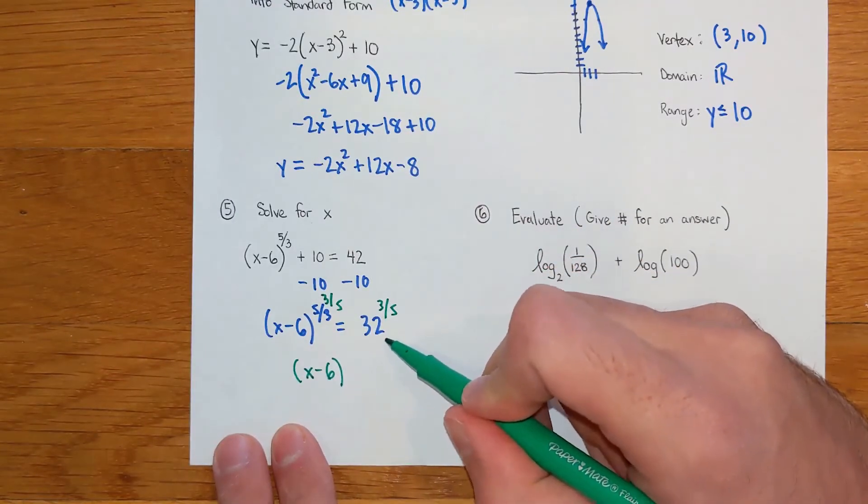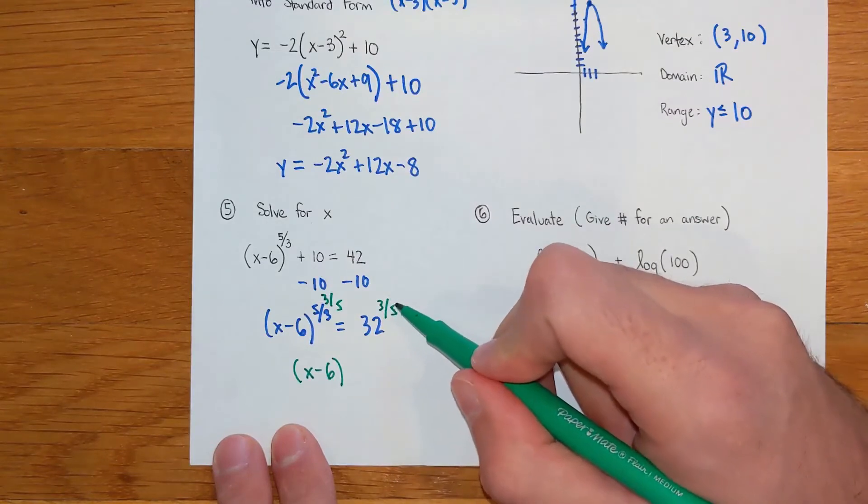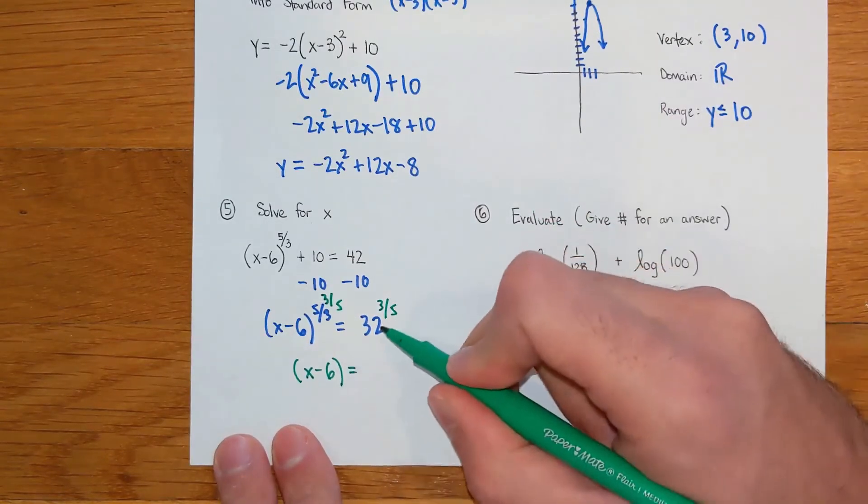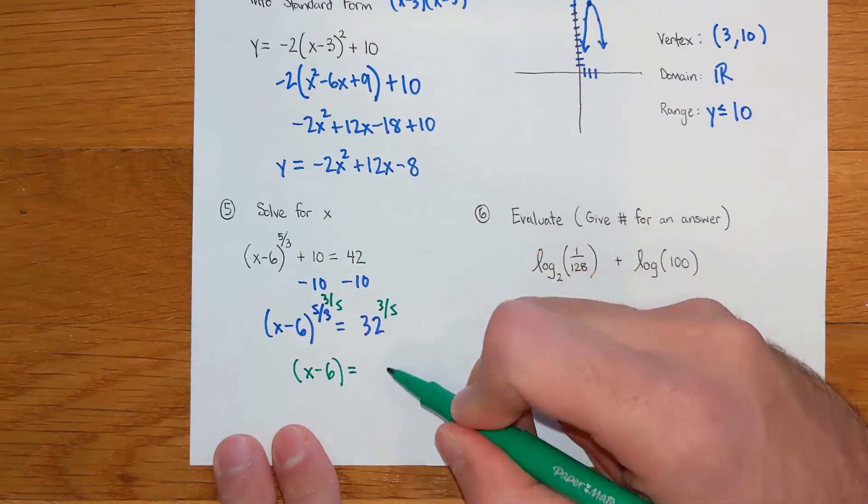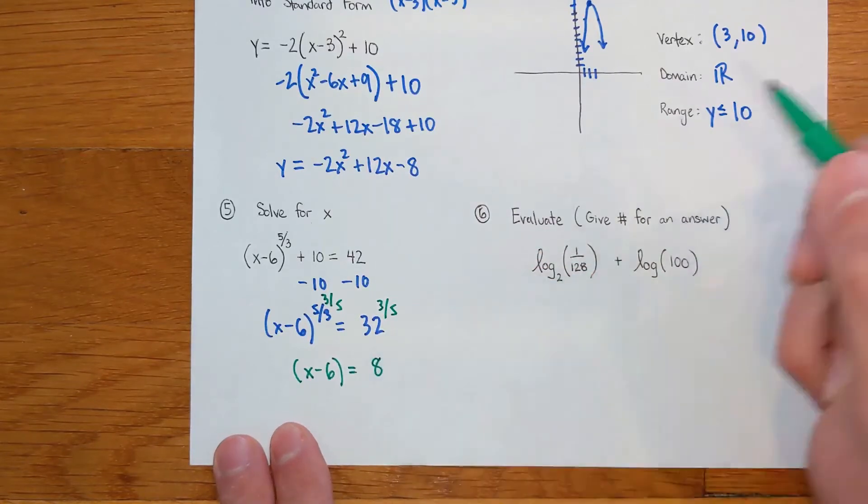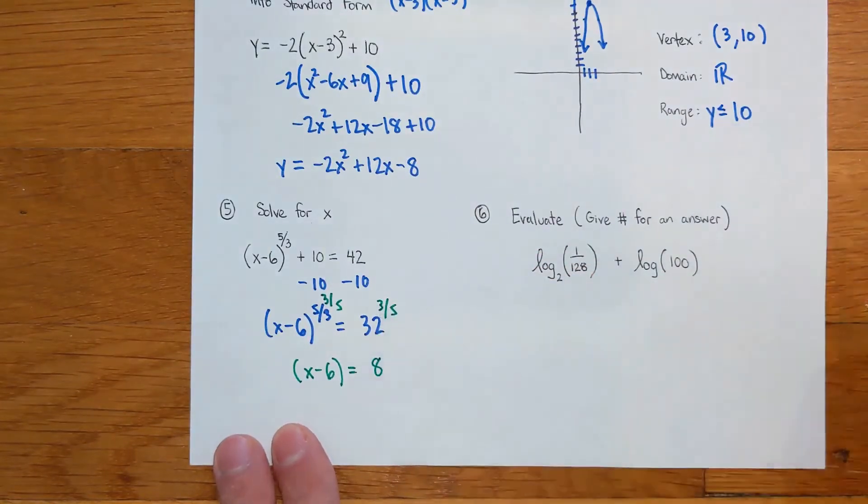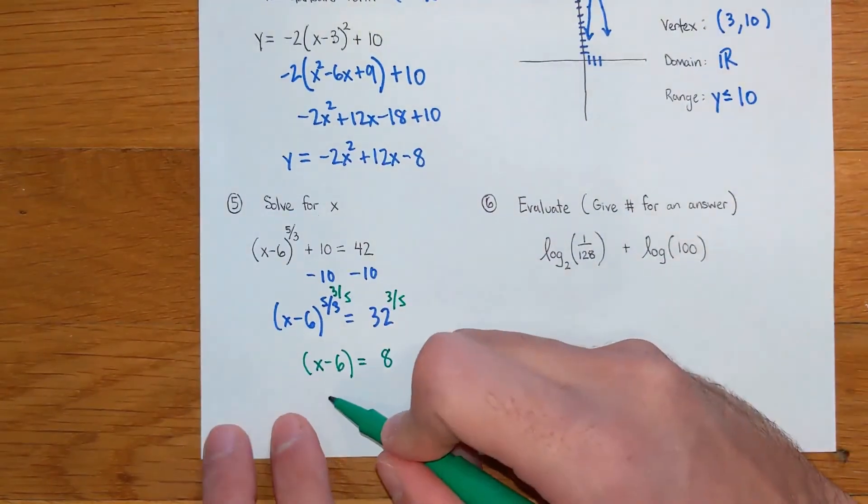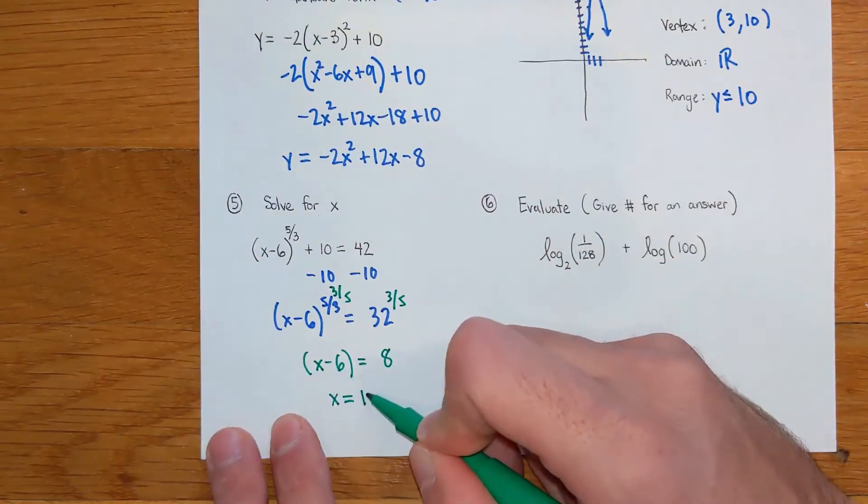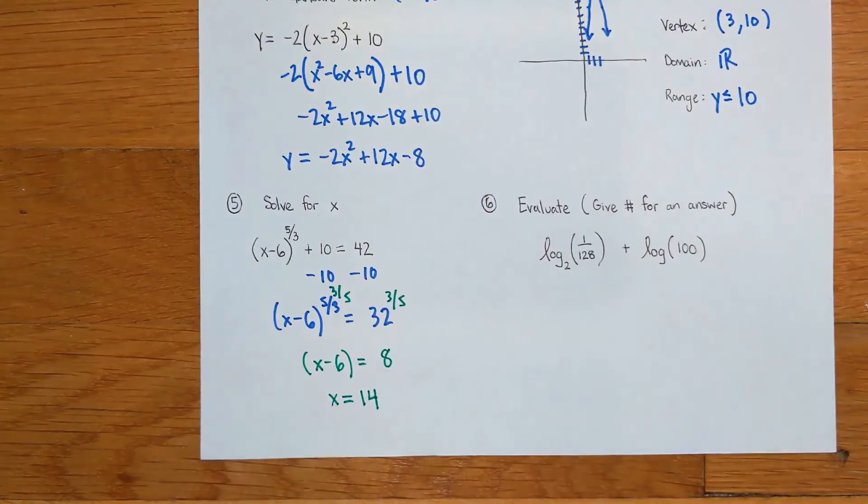If you don't have a calculator handy that can do this, you can just do 32 to the exponent of 0.6, that's what three over five is. Or if you're in honors, I did show you guys how to do this by hand. You should get eight when you actually do 32 to the three over five power. Then it's easy to finish. You add the six. Final answer for this one is x equals 14.